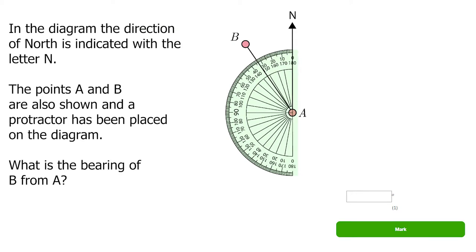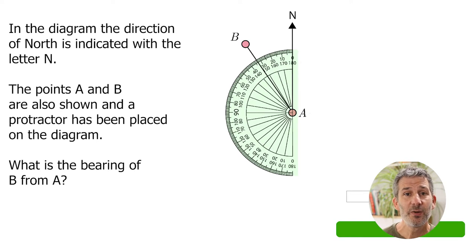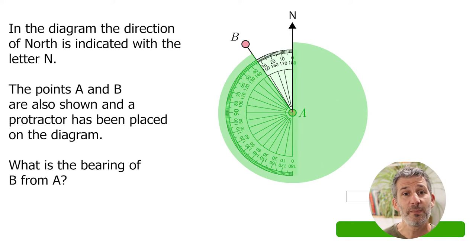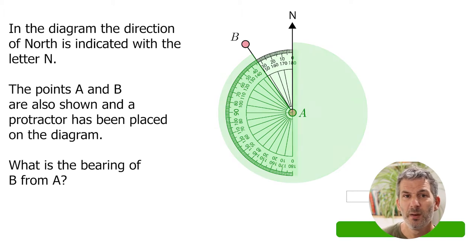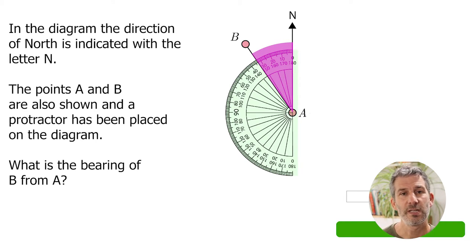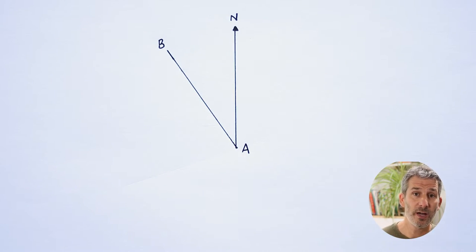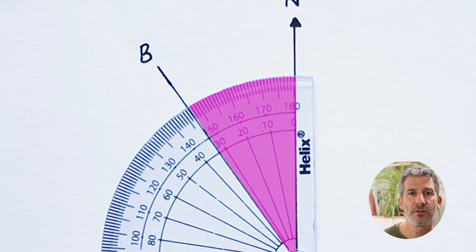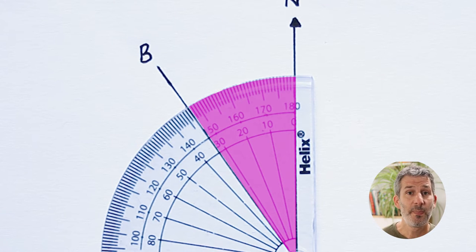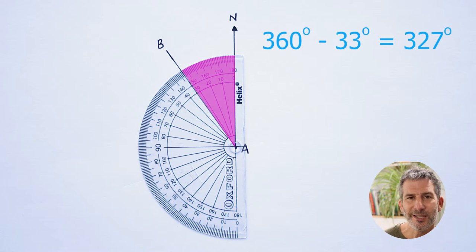In the diagram, the direction of north is indicated with the letter N. The points A and B are shown and a protractor has been placed on the diagram. What is the bearing of B from A? We need the angle clockwise starting from north — point B is almost a full turn, so just a little less than 360 degrees. I measure how much less than 360 it is by measuring the acute angle anti-clockwise from north and subtracting from 360. That acute angle is between 30 and 40 on the protractor — in fact three on from 30, so 33 degrees. The bearing clockwise from north is 33 degrees less than 360, which is 327 degrees.